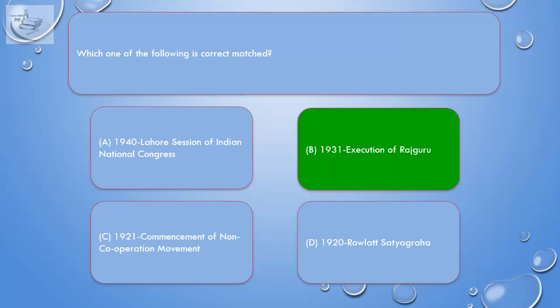Correct answer is B. 1931 – Execution of Rajguru.